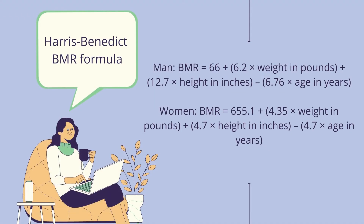Harvard research has shown that calorie counting is easy, fast, and simple. The formula is a relatively simple process in which a person multiplies their BMR by the average daily activity level. Let's calculate your BMR using the Harris-Benedict BMR formula.